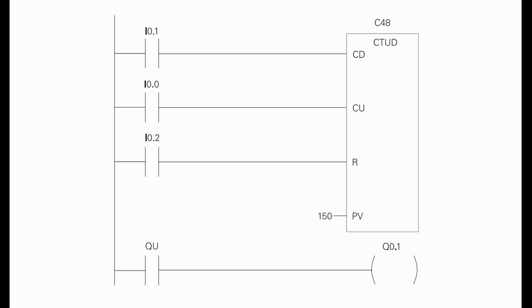The parking lot has 150 parking spaces. This value has been stored in the preset value (PV). The counter output has been directed to output Q0.1, which is connected to a parking lot full sign. As cars enter the lot, input I0.0 transitions from a logic 0 to a logic 1, incrementing the count by 1. As cars leave the lot, input I0.1 transitions from a logic 0 to a logic 1, decrementing the count by 1. When the count reaches 150, output Q0.1 transitions to logic 1 and the parking lot full sign illuminates. When a car exits, decrementing the count to 149, the sign turns off.